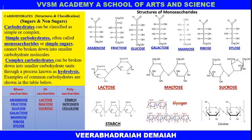Monosaccharides are nothing but simple sugars. Coming to the disaccharides: they are lactose, maltose, and sucrose. Lactose is made up of two units joined by an oxygen bridge — the glycosidic linkage — composed of glucose and galactose. Maltose is made up of two glucose molecules. Sucrose is made up of two units by the glycosidic linkage, derived from glucose and fructose.